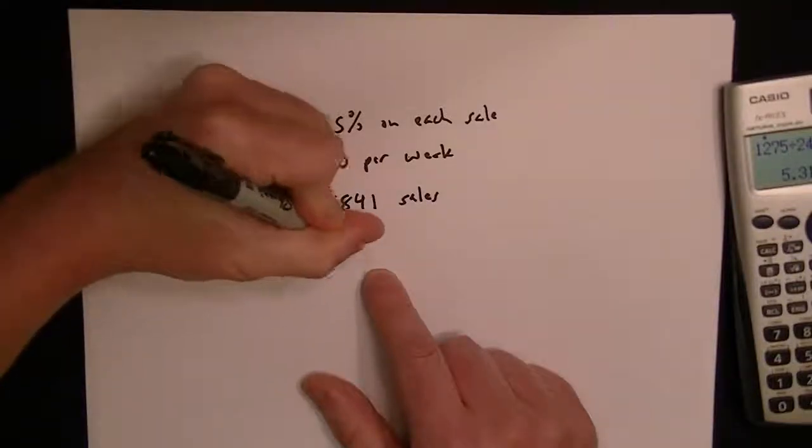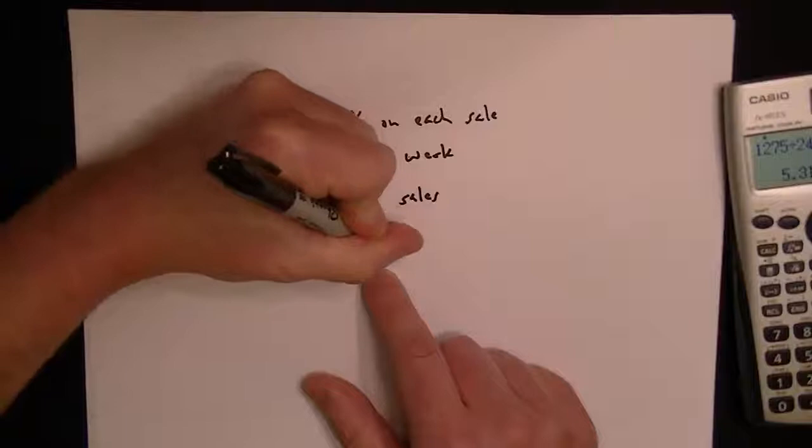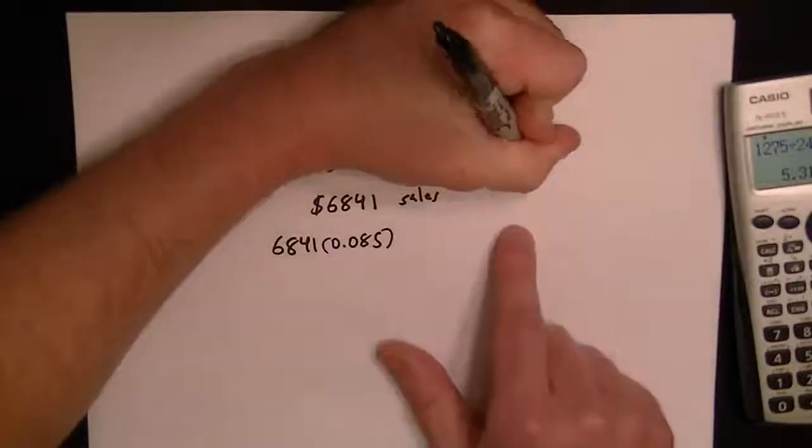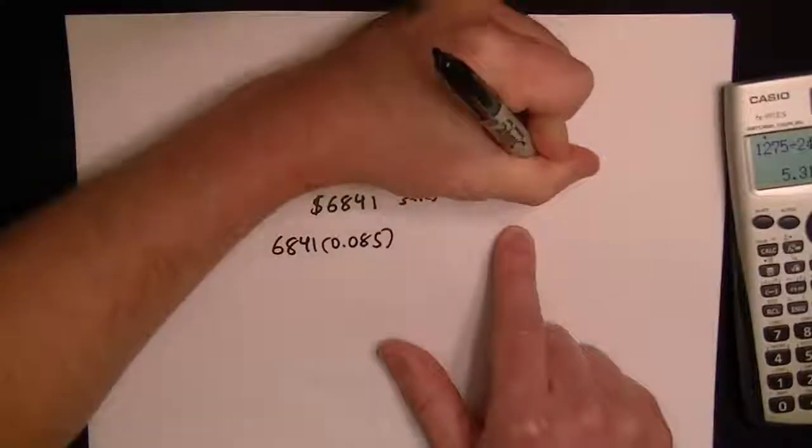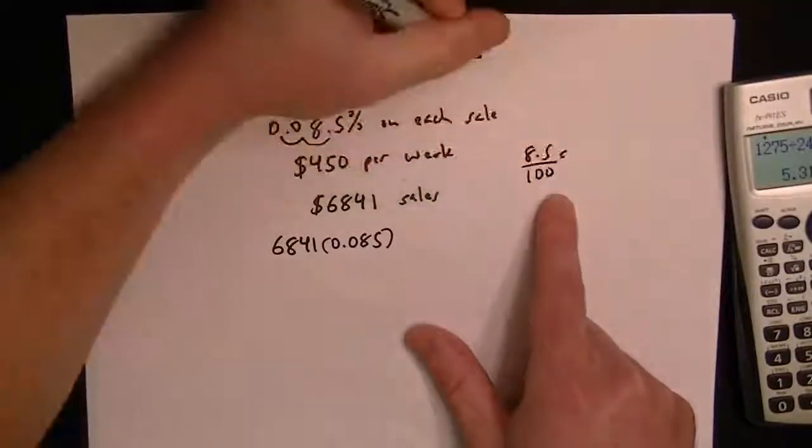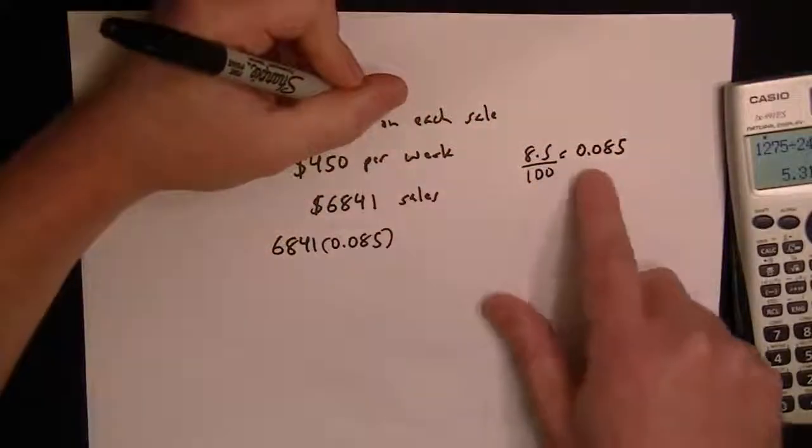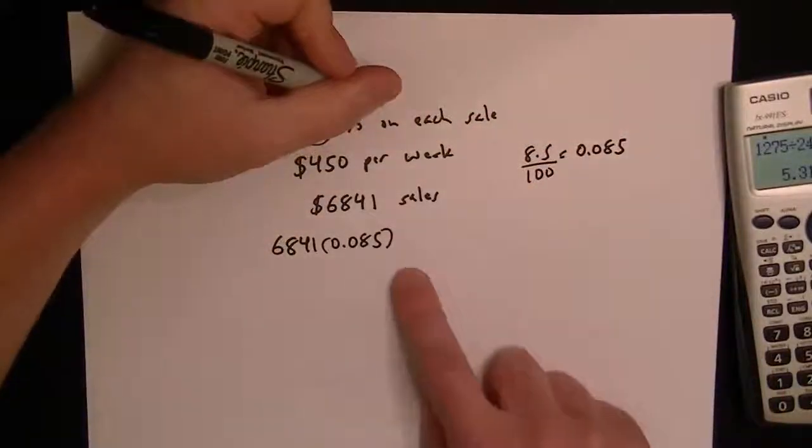So that would give us 0.085, that's 8.5%, or you could just do 8.5 divided by 100 on your calculator. And that will give you the same answer as moving the decimal over two places to the left.